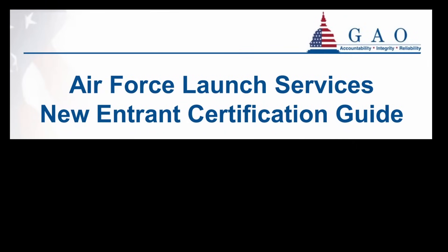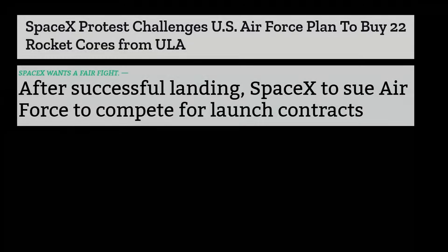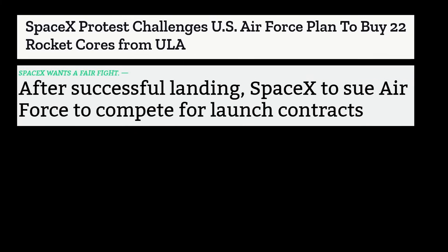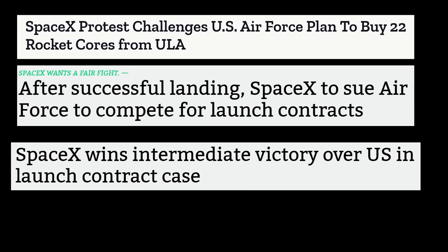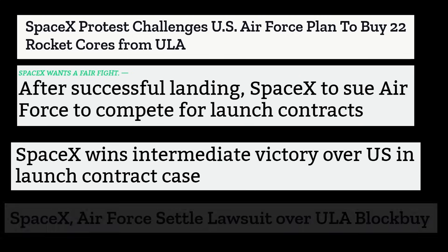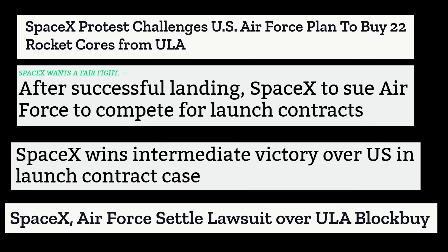The first step was to get certified so they could be allowed to bid on those launches. SpaceX felt that the Air Force was dragging its feet in certifying Falcon 9, and that the Air Force's plan to do a bulk buy of 36 rockets from ULA did not allow SpaceX to compete for the launches that Falcon 9 was capable of, and was therefore illegal under procurement laws. SpaceX therefore lodged a protest. They won an intermediate victory, and the presiding judge sent the matter to mediation, and an agreement was reached in January of 2015. The big thing that SpaceX got out of this was a certification to launch Air Force payloads on Falcon 9, and a total of seven launches in the Phase 1 batch.